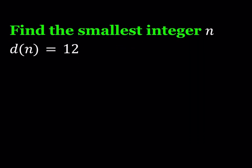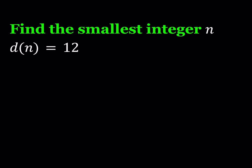Today we're going to talk about an equation of d(n). d sub n is actually a function that is responsible for the number of divisors of an integer. So d(n) represents the number of divisors of n, and we want to find the smallest integer n for which the number of divisors is 12 — in other words, the smallest integer with 12 divisors.